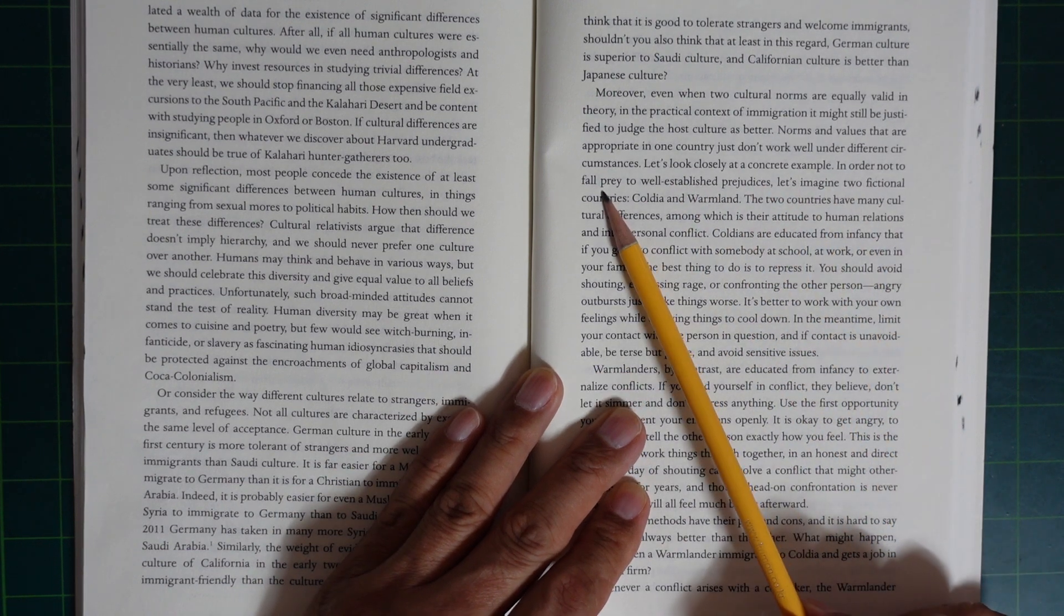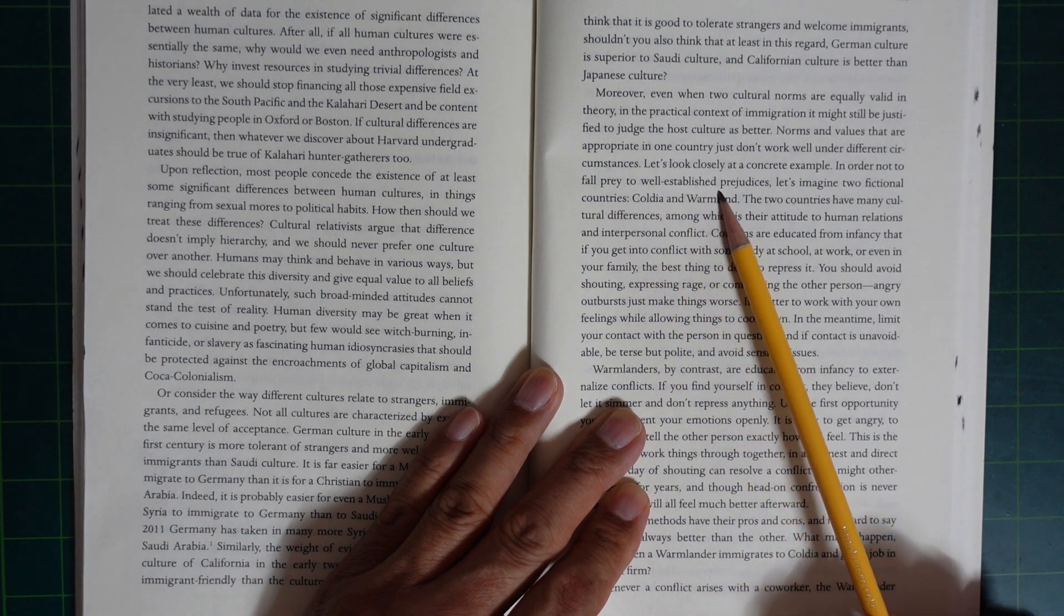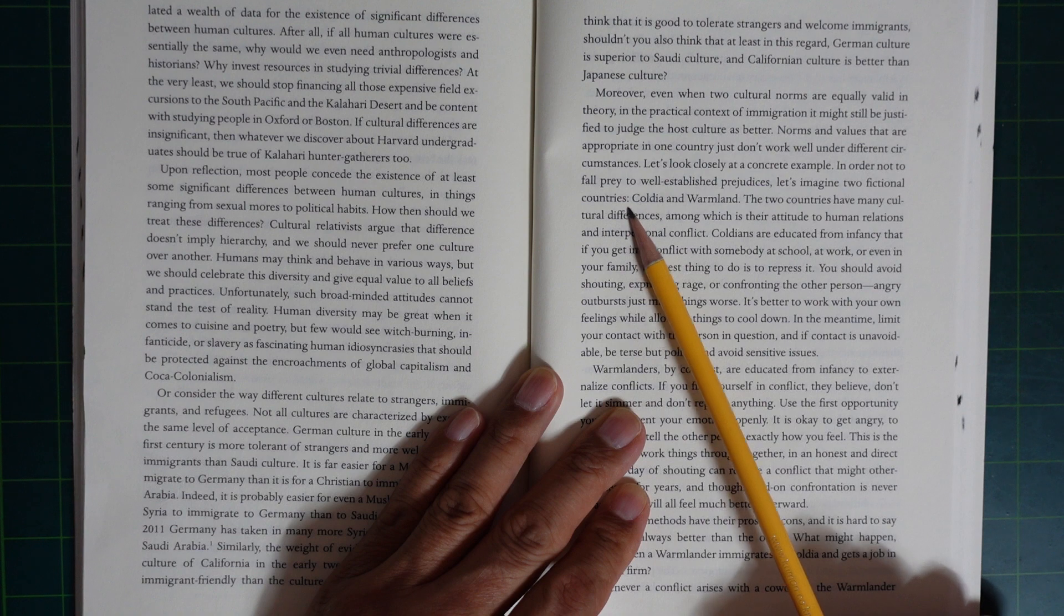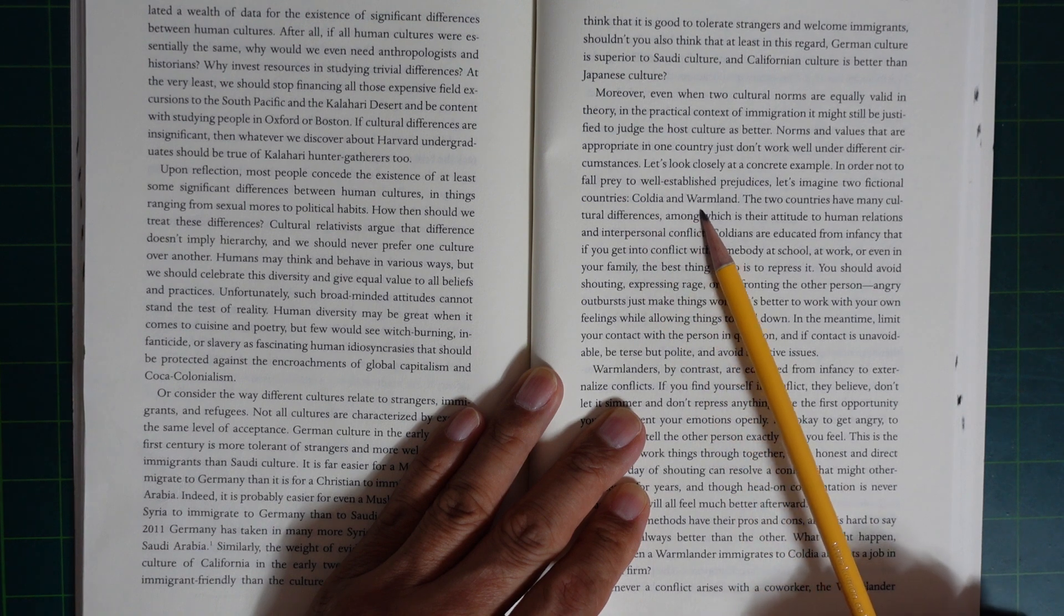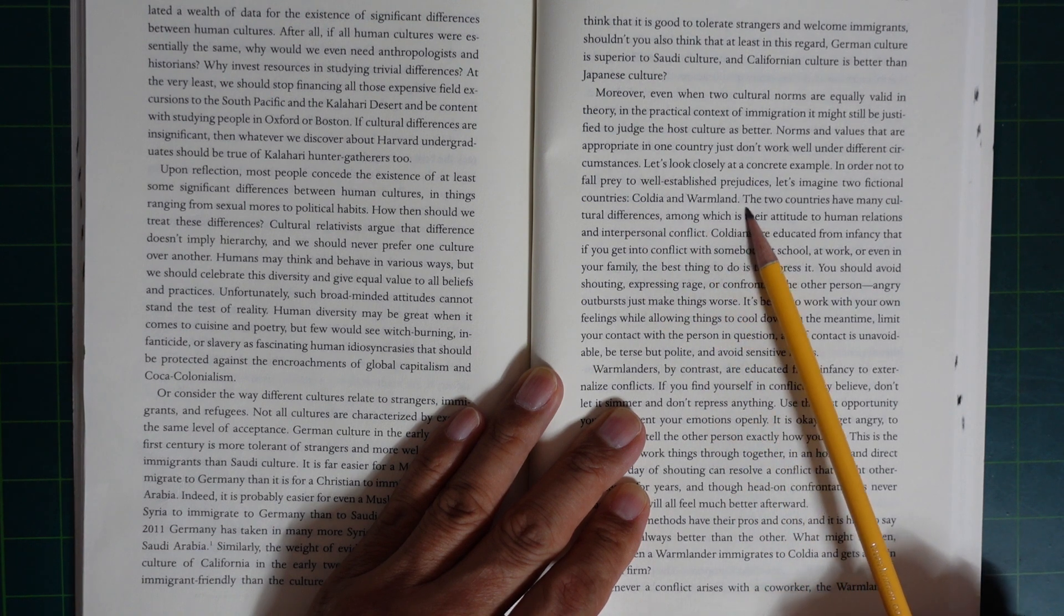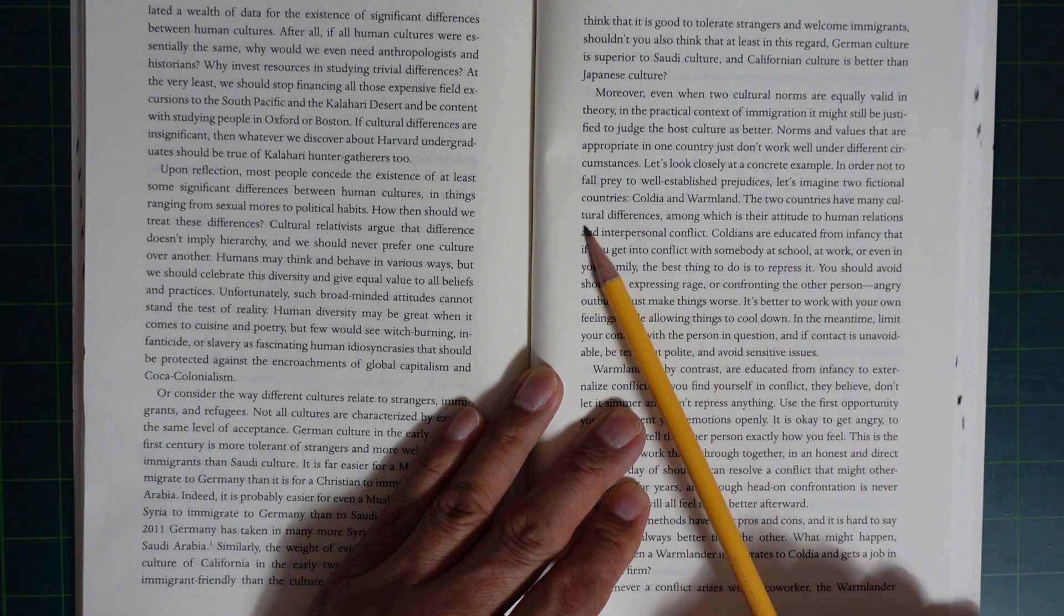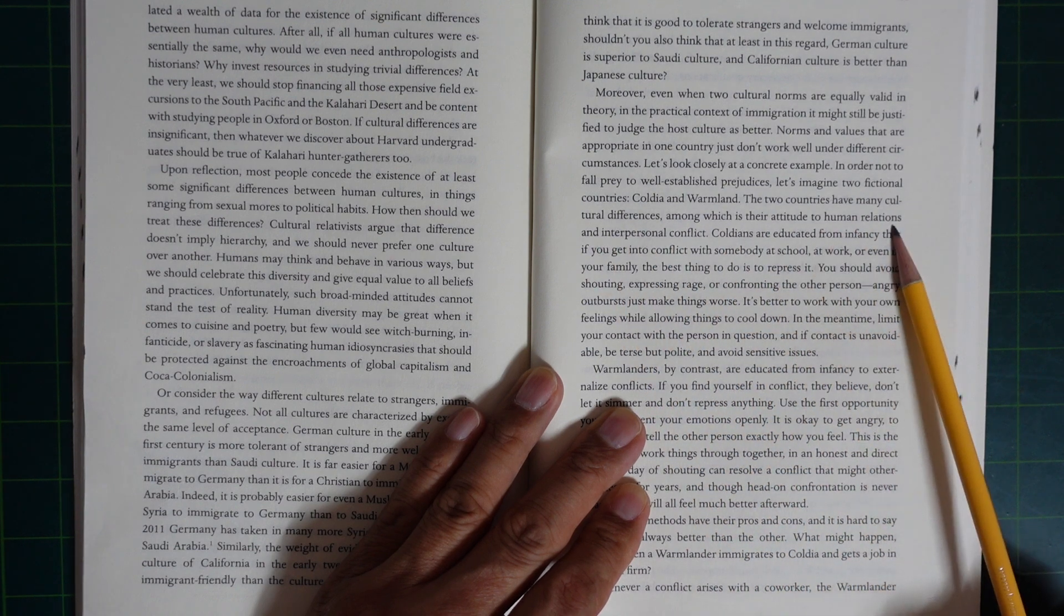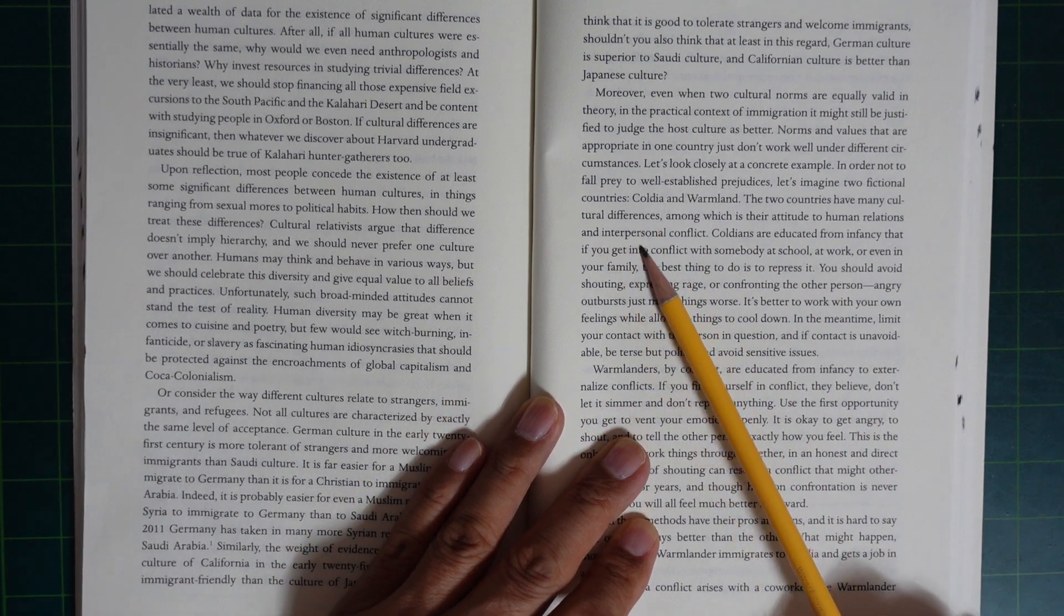In order not to fall prey to well-established prejudices, let's imagine two fictional countries, Coldea and Warmland. The two countries have many cultural differences, among which is their attitude to human relationships and interpersonal conflict.